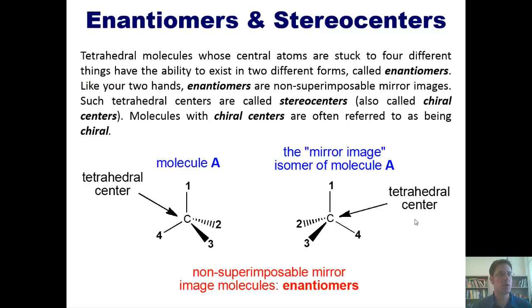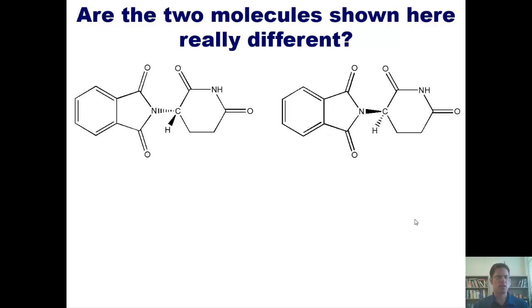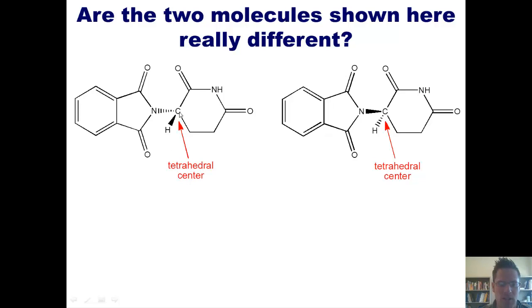That takes us to a very important question. Are the two molecules shown here really different? I want you to look at them momentarily, see if you can answer the question, and then I'll offer you an explanation. Well, if you look at them closely, you'll notice that they do indeed have a tetrahedral center, this carbon center in each. You'll also notice if you look at it closely that the tetrahedral centers in these molecules are indeed bonded to four different substituents.